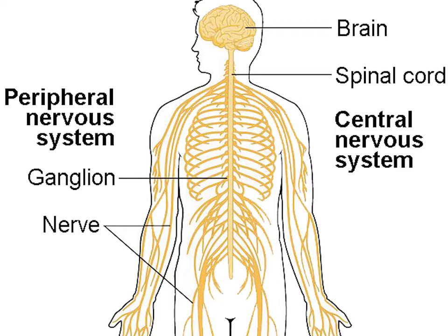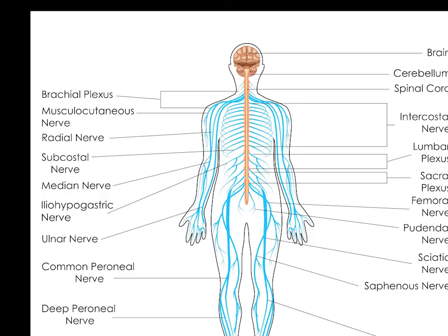The spinal canal contains the spinal cord, while the cranial cavity contains the brain. The CNS is enclosed and protected by the meninges, a three-layered system of membranes, including a tough, leathery outer layer called the dura mater. The brain is also protected by the skull, and the spinal cord by the vertebrae.